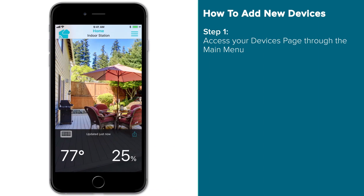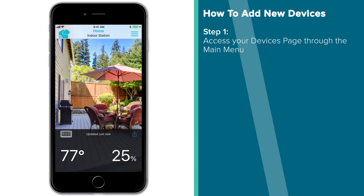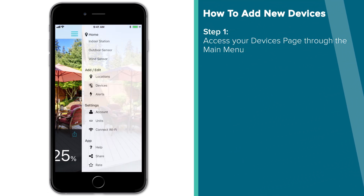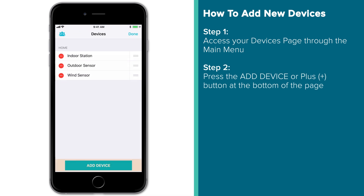So let's get started. To add new devices to your LaCrosse View app, simply enter your main menu, select the Devices tab, and press the Add Device button at the bottom.